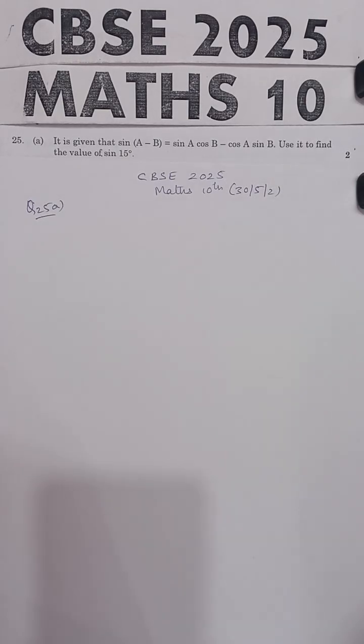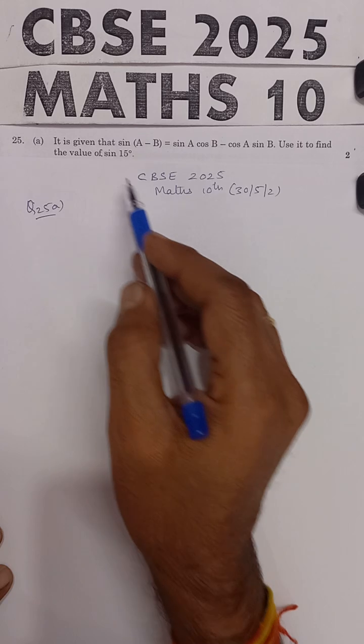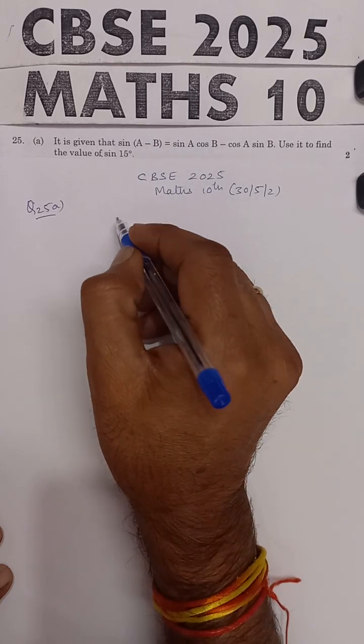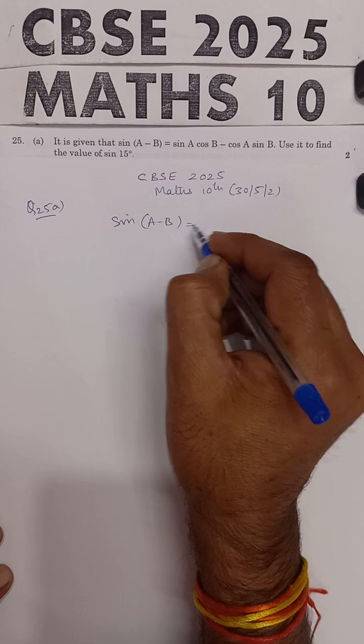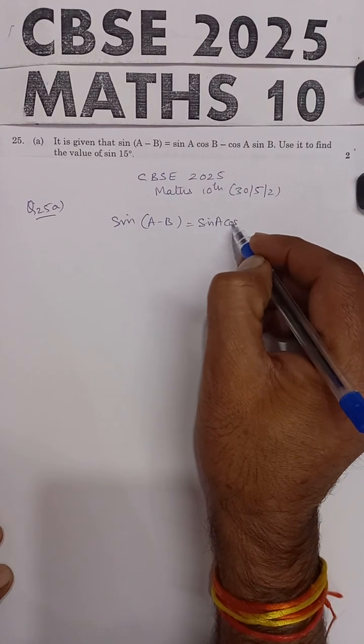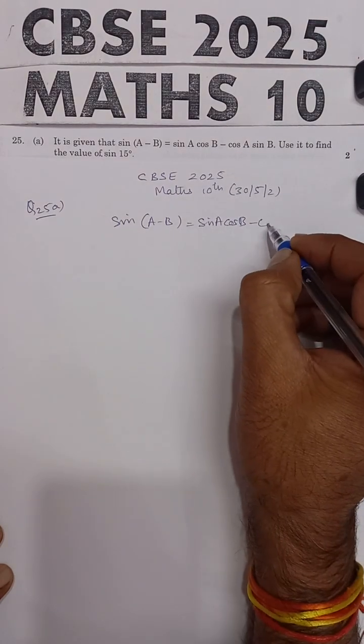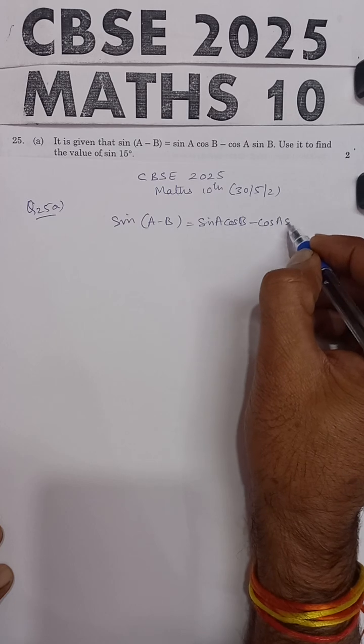This question is from CBSE Maths 10th, 2025 Board Examination. The problem states: it is given that sine of A minus B is equal to sine A into cos B minus cos A into sine B.